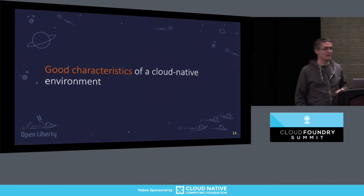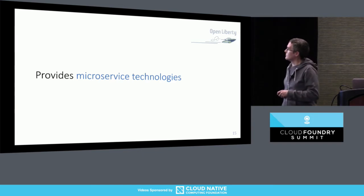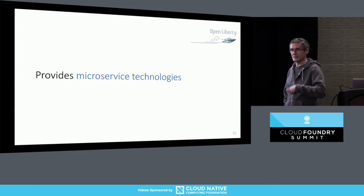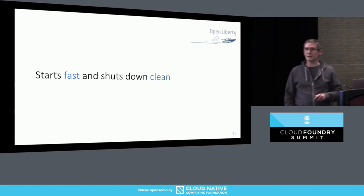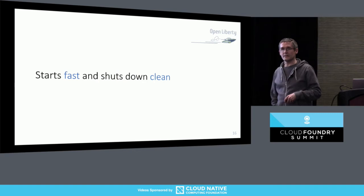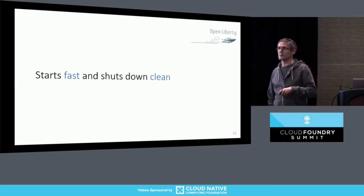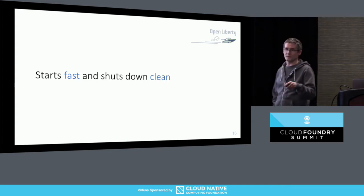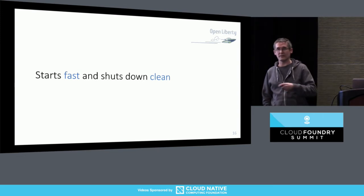Let's look at cloud-native environments and what capabilities you should be looking for. If you're doing microservices, you want an environment that provides microservice capabilities - APIs that help you develop, provide, and consume microservices. You also want an environment that starts fast and shuts down clean. You're going to be deploying a lot more of these things. The adage goes: treat them like cattle, not pets - you want to be able to shoot them. If they get sick, you want to shoot them, and you don't want stuff lying around that causes problems when you start up a new one.